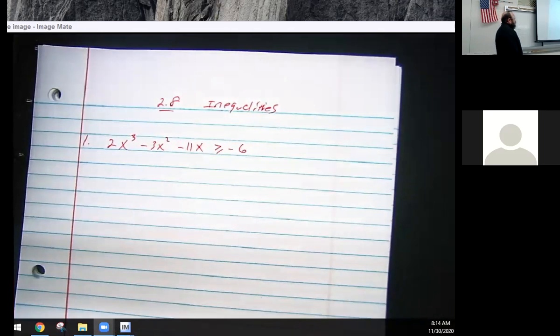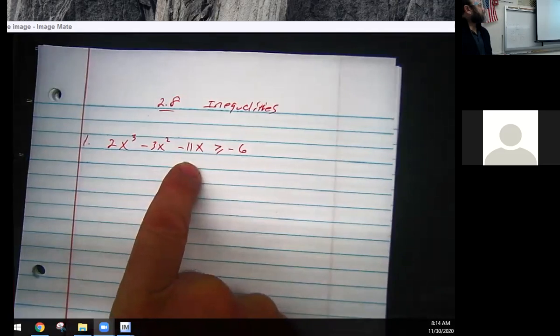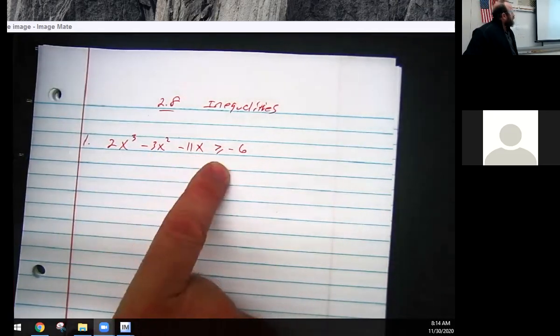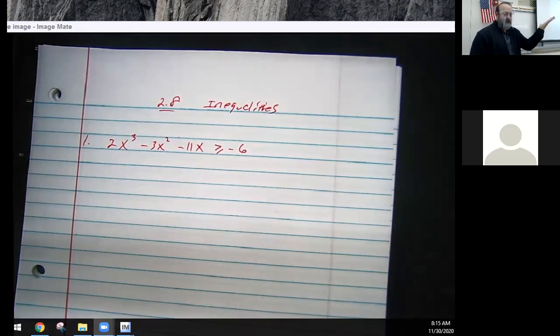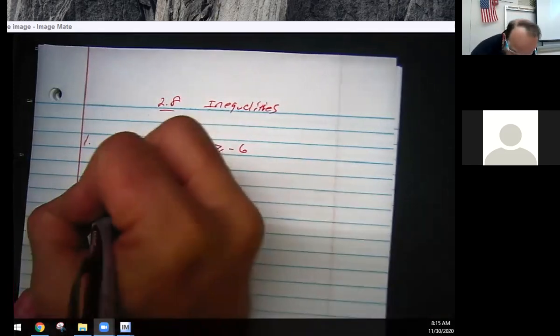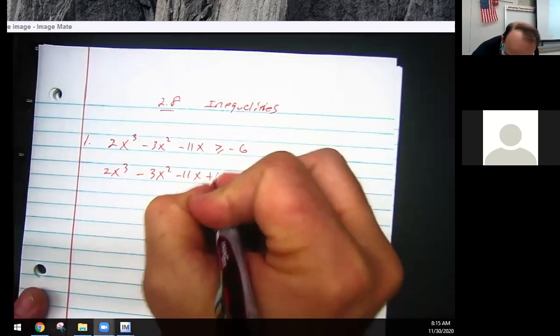Notice what I did not compare that to. I have this cubic equation right here, this cubic polynomial, and I'm saying that it is greater than or equal to negative six. What did I not compare it to? I didn't compare it to zero. Well, guess what we're going to do? Move it over. Could I do that in basically every problem ever? That's the first thing we always do.